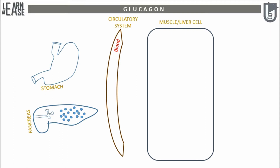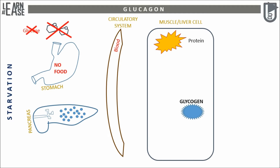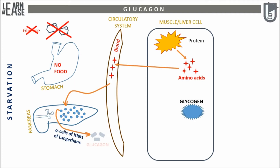In the liver or muscle cell, energy reserve in the form of muscle protein and glycogen is shown. Glucagon functions under the condition of starvation and fasting. During such situations, the body will start catabolizing protein, causing the release of free amino acids which will enter into the blood. A spike in free amino acids in the blood is sensed by alpha cells of the islets of Langerhans, and they will release glucagon.